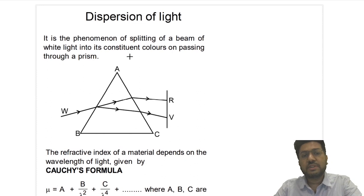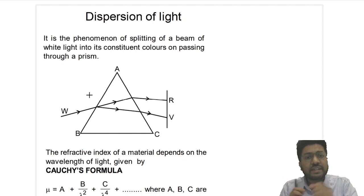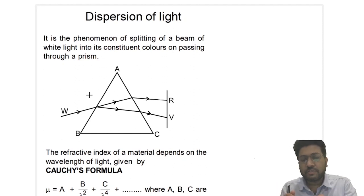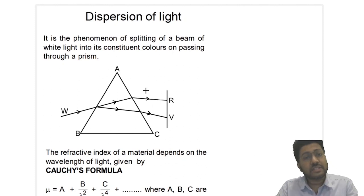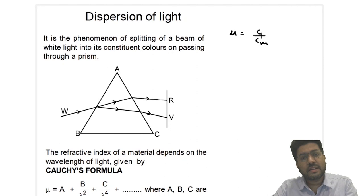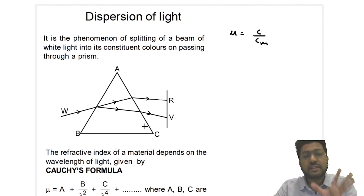So what is dispersion of light? We know that for a given medium, the speed of light of different colors is different. Although the speed of light of all colors is the same in vacuum, but as soon as it enters a medium, the speed of red light becomes different and the speed of violet light becomes different. That means the refractive index of different colors is different for the same medium, because refractive index is C by C_m. So speed of light in vacuum is same for all colors, but the speed of light in medium is different for different colors. So the refractive index of different colors is different for the same medium.